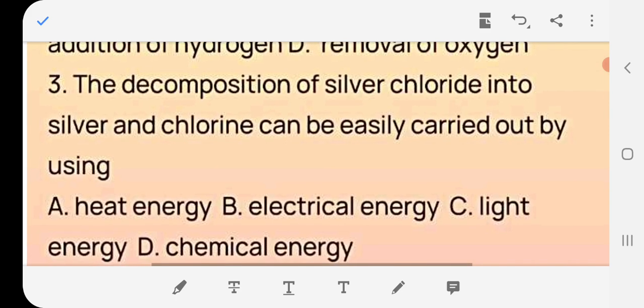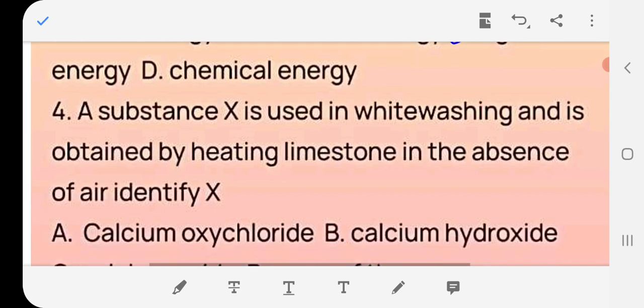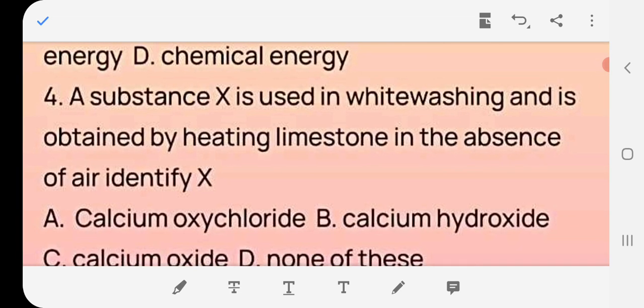Question number three: the decomposition of silver chloride into silver and chlorine can be easily carried out by using A. heat energy, B. electrical energy, C. light energy, D. chemical energy. The answer is C, light energy.